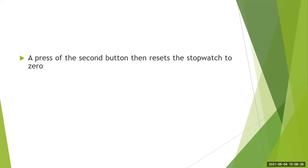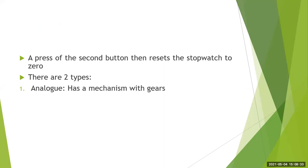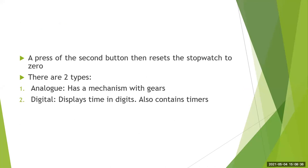A second press of the second button resets the stopwatch. There are two types of stopwatches: analog, which has a mechanical mechanism with gates, and digital, which displays elapsed time in digits and can also be combined with timers. Analog is preferred because it allows continuous use without difficulty in reading. Digital is better because it is easy to use and has additional functions, making it very useful in the laboratory.